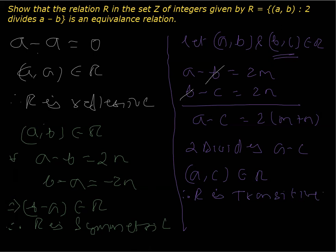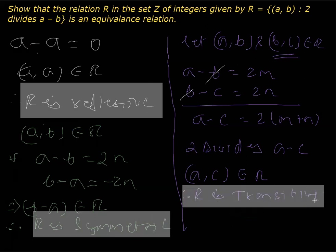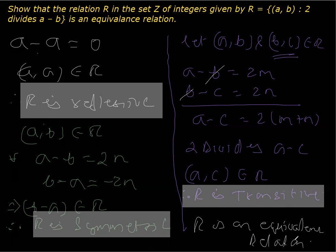So we have proved all three properties: first reflexive, then symmetric, and then transitive. As you know, when all three of these conditions are true — when R is reflexive, symmetric, as well as transitive — we say R is an equivalence relation. This is how you prove this question.